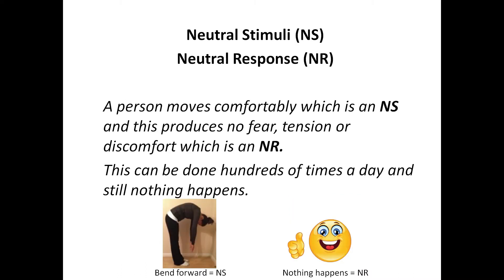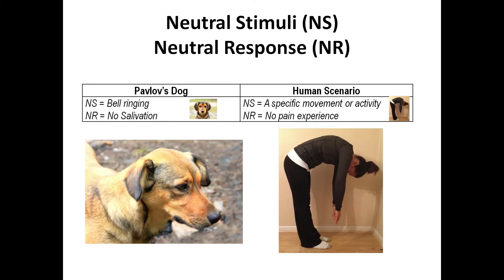A person moves comfortably, which is an NS, and this produces no fear, tension, or discomfort, which is an NR. This can be done hundreds of times a day and still nothing happens. Go ahead, stand up, bend forward, and see if anything happens. Hopefully, if you don't have back pain or a history of it, nothing will happen. In Pavlov's dog situation, the NS is bell ringing and the NR is no salivation. In the human scenario, the NS is a specific movement or activity, and the NR is no pain experience.